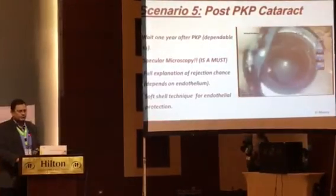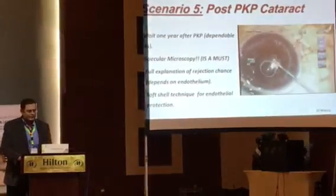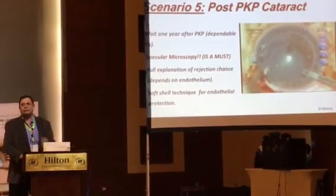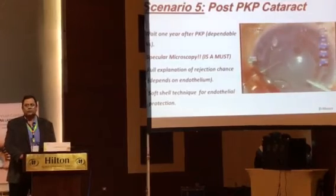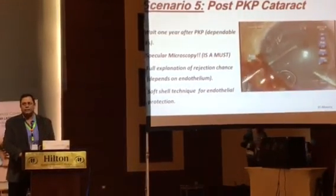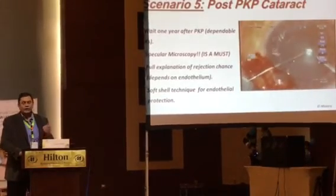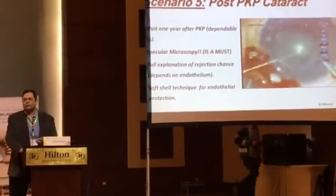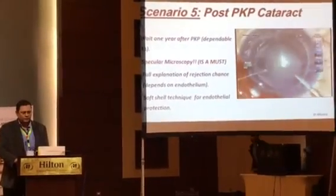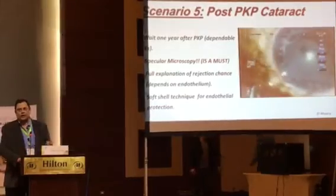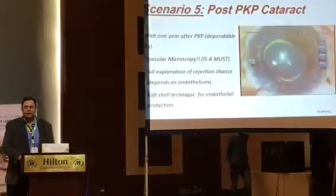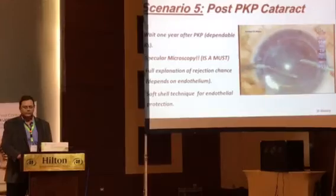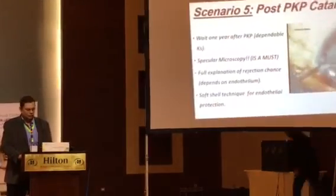Scenario five: post-PKP cataract, as we heard from Dr. Amr. You have to wait one year before depending on the readings from this cornea. Perform specular microscopy for these patients and clarify that the cornea could decompensate after surgery because endothelial cell count is definitely less than normal. Give full explanation about the risk of graft rejection. To protect the cornea: use soft-shell technique, different viscoelastics, and always keep in mind to use very low ultrasonic power. Keeping an air bubble behind the cornea is another trick to preserve corneal endothelium.